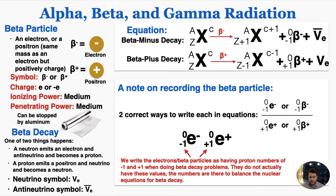There are two correct ways to write beta particles in equations, either as lowercase e or as beta, because they're both electrons and positrons. There's one really weird aspect of this notation that only comes up in beta radiation problems. We write the electron or beta particles as having proton numbers of minus 1 and plus 1 when doing beta decay problems. Obviously they don't actually have these values — they don't have protons moving along with them. The numbers are there to balance the nuclear equations for beta decay. This is just a way of saying that if an electron were emitted, you should expect a proton to appear somewhere else that didn't appear before, while the nucleon number remains the same, which is what beta decay does.